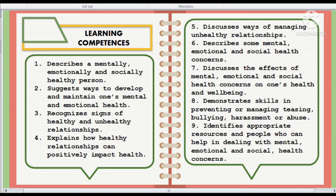Number five: discusses ways of managing unhealthy relationships. The learners are taught that not all people they encounter are the same, but there are different ways to manage it and develop self-awareness by giving them techniques on how to avoid this kind of situation. Number six: describes some mental, emotional, and social health concerns. The learners are being oriented to be cautious of their health, as sadness and anxiety are normal emotions that help alert us, protect us from, and cause us to act.